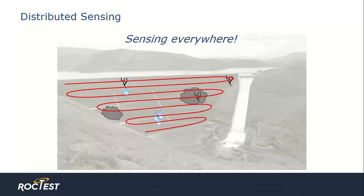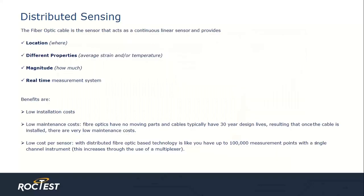Each traditional sensor requires its own signal cable and its own installation effort. The distributed fiber optic cable is a continuous linear sensor. Continuous monitoring over its entire length yields the precise location of the reading within a meter, the type of data (strain or temperature), the magnitude of these data, and the precise time events occurred. The cable has a spatial resolution of one meter, giving the end user a data point every meter. Because the cable itself is the sensor, it provides cost savings in both materials and installation. Additionally, because distributed fiber has no moving parts and is designed with a 30-year lifespan, maintenance costs are extremely low.